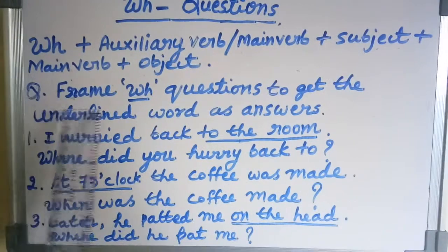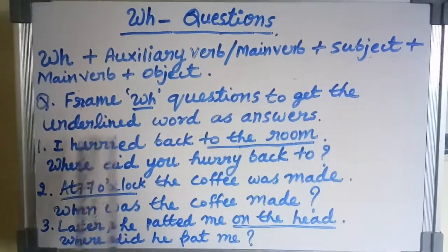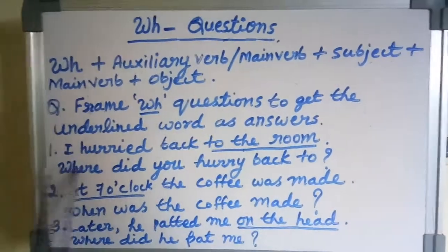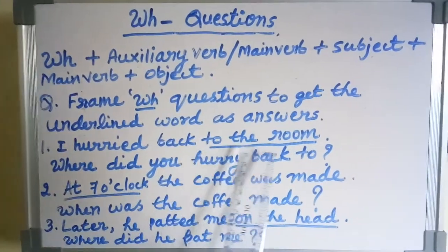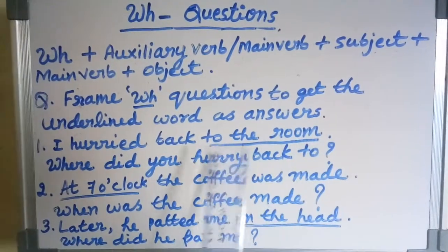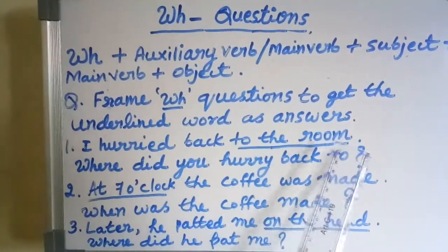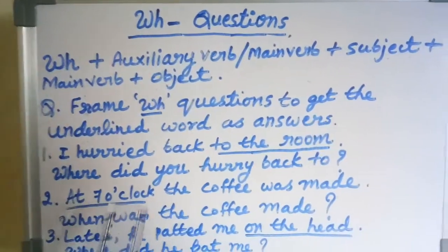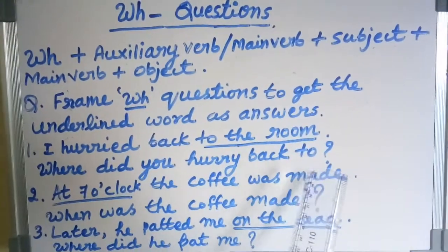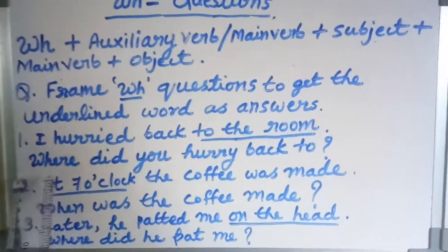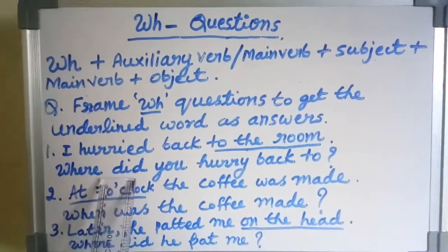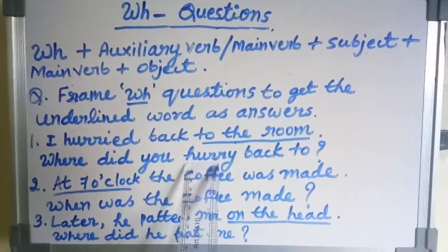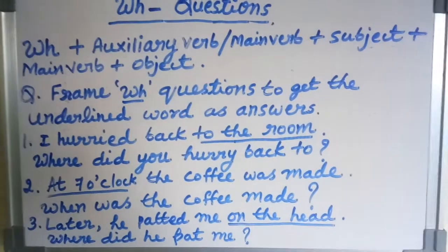For example: frame WH questions to get the underlined word as the answer. Sentence: 'I hurried back to the room.' Here the underlined word is 'to the room.' The answer is: 'Where did you hurry back to?' — WH word, then auxiliary verb, then subject, then main verb, then the remaining part of the sentence.